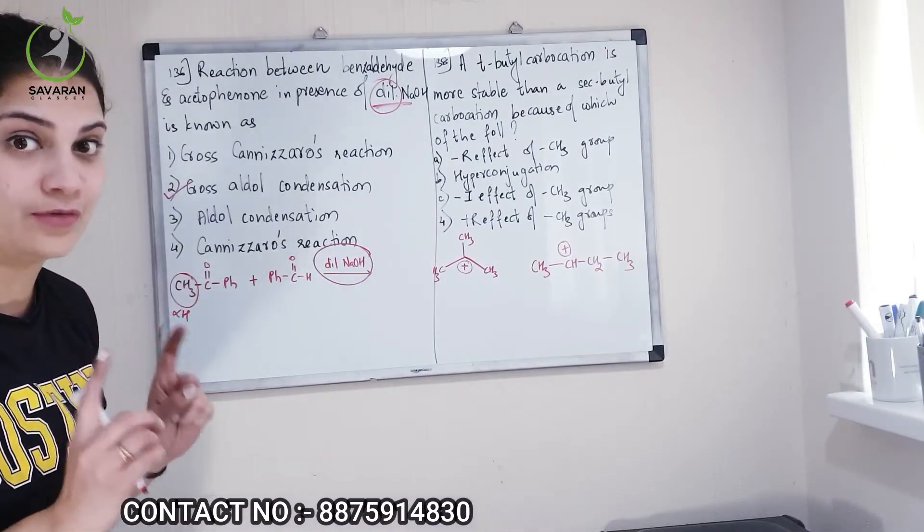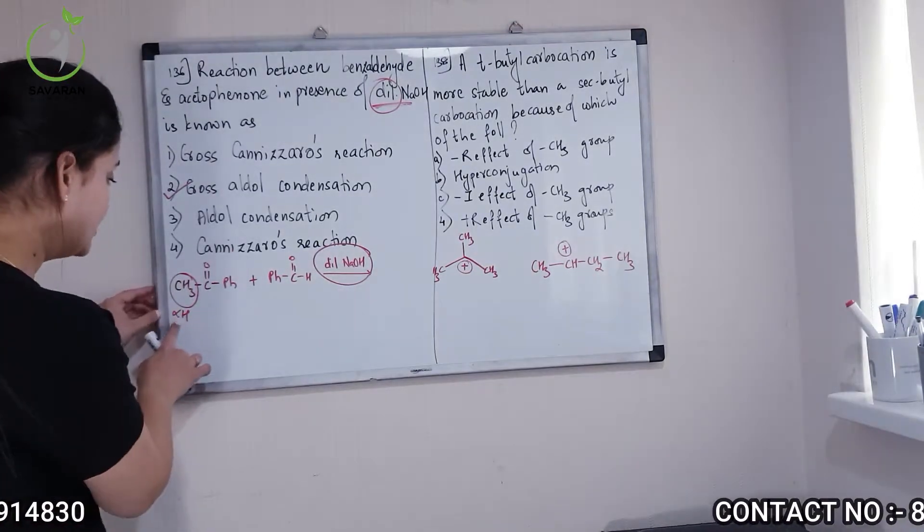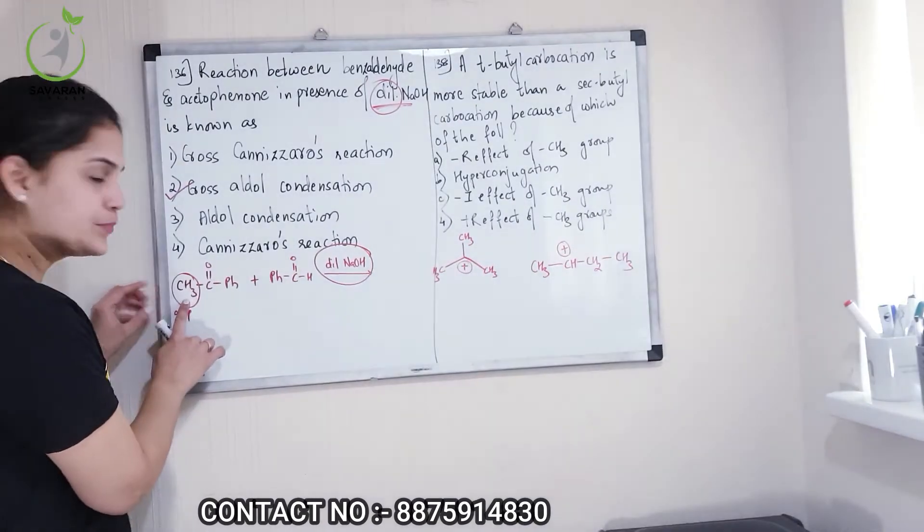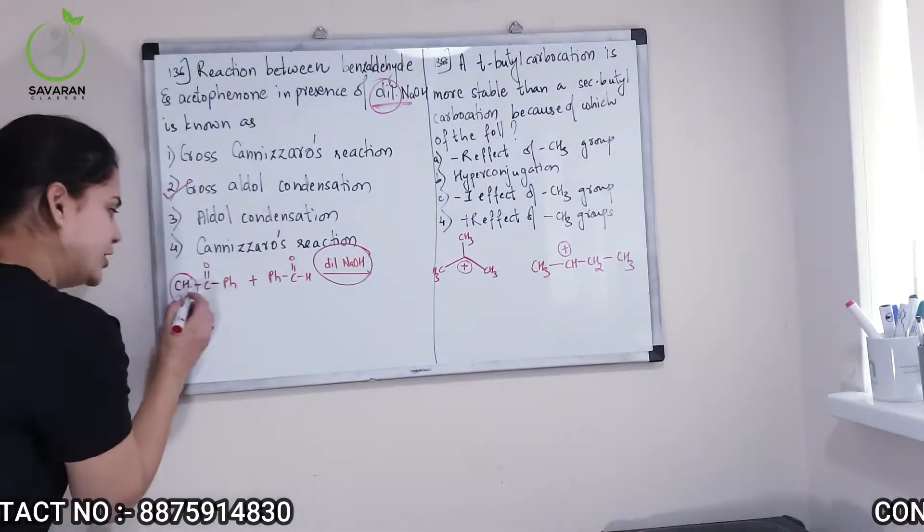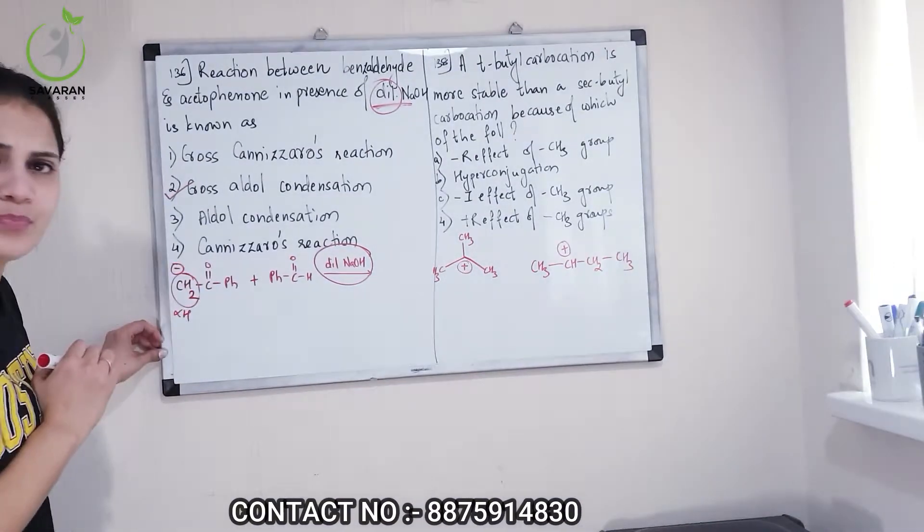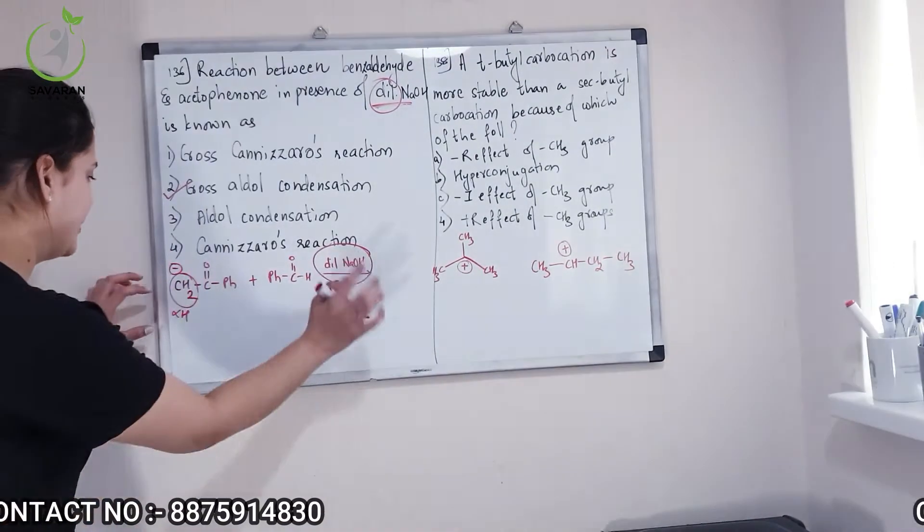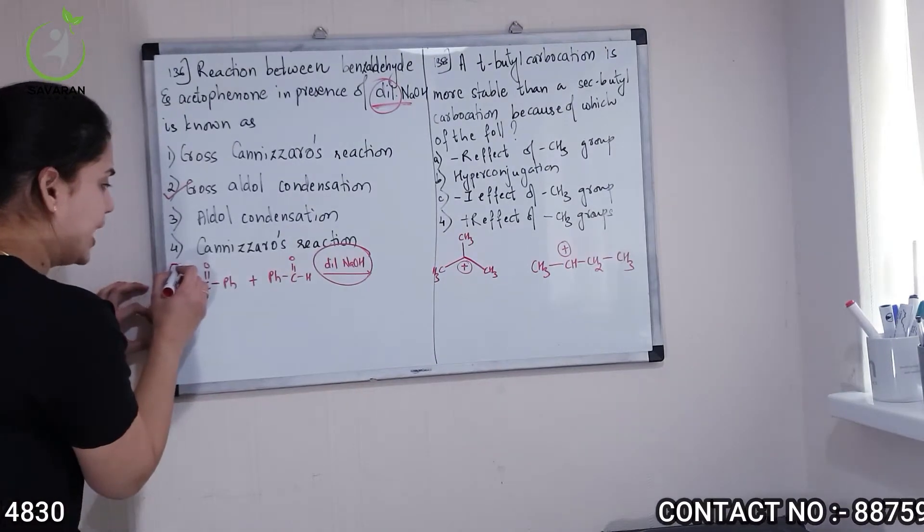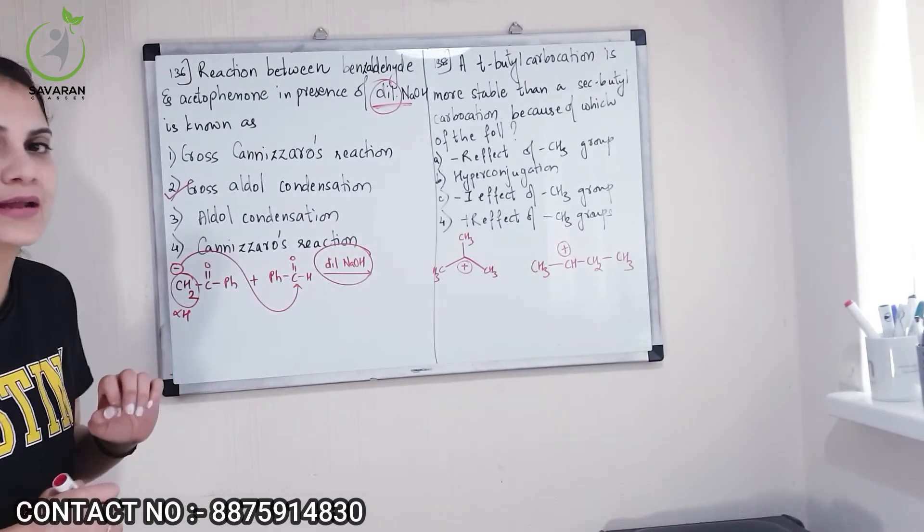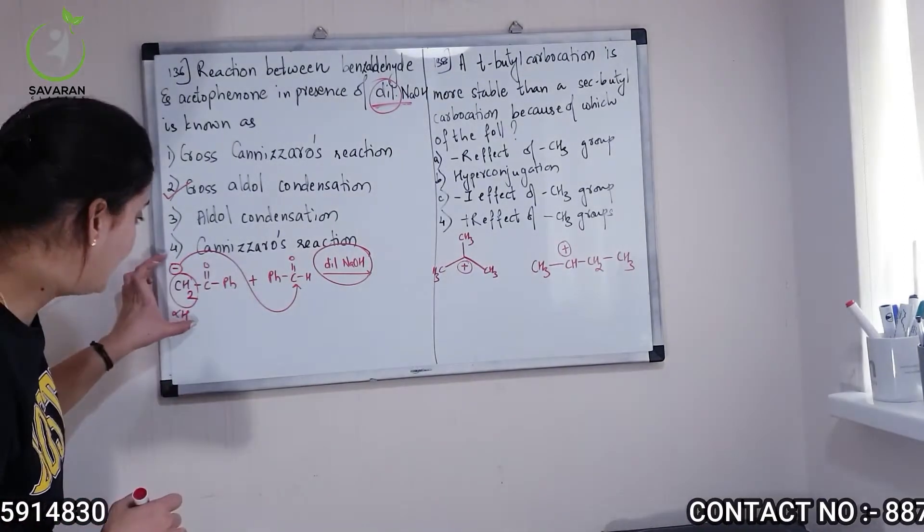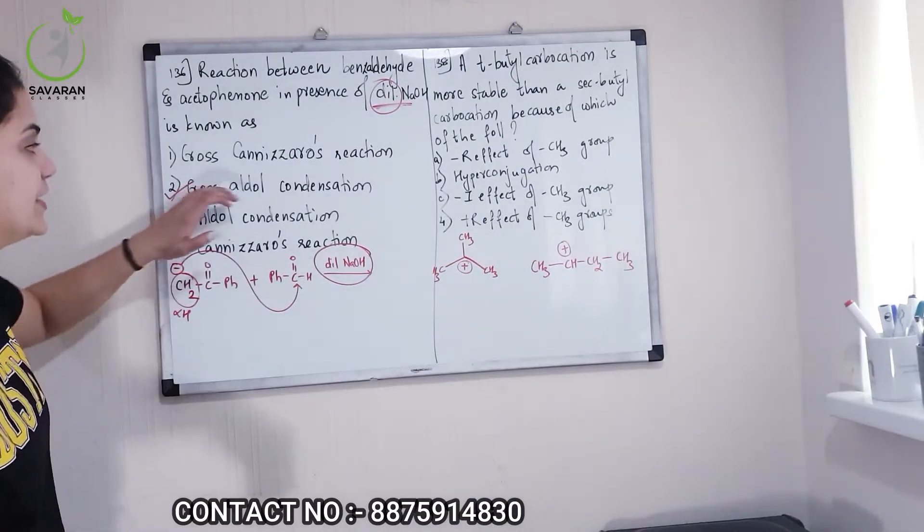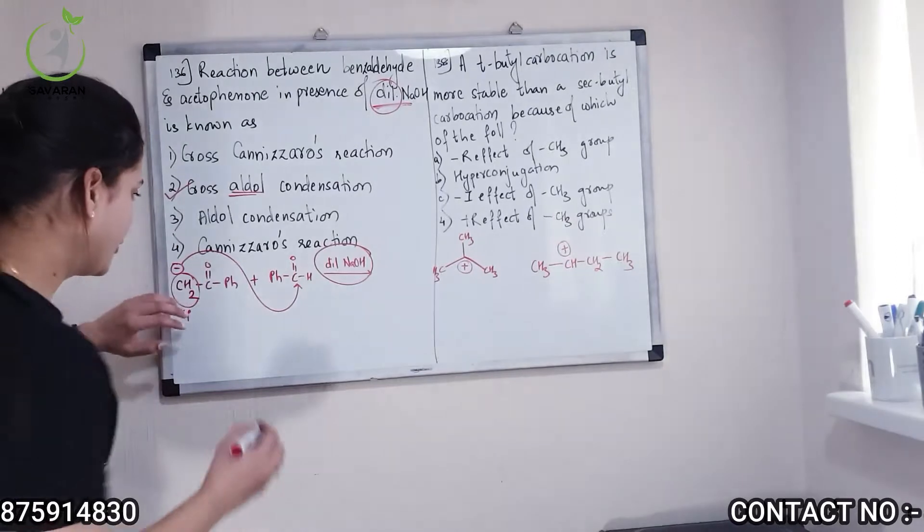Just take care of that. It is cross aldol condensation. Why? Because here is alpha hydrogen. What will happen here? The base does deprotonation. If it is deprotonation, then it will be CH2. After chopping H with minus H, the base generates a carbanion. This carbanion will attack because the carbanion generated here.